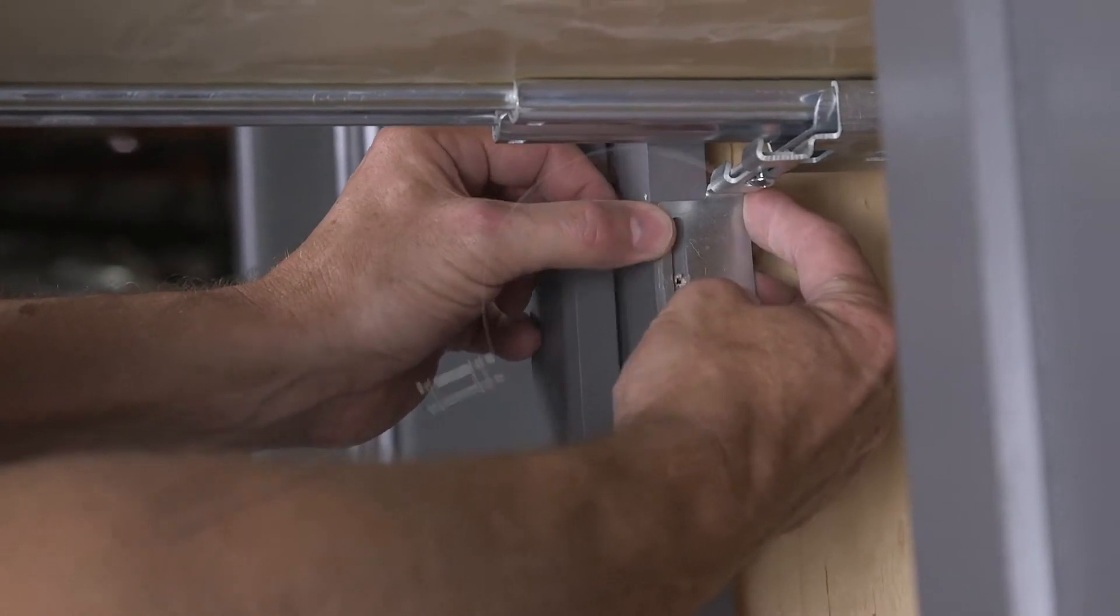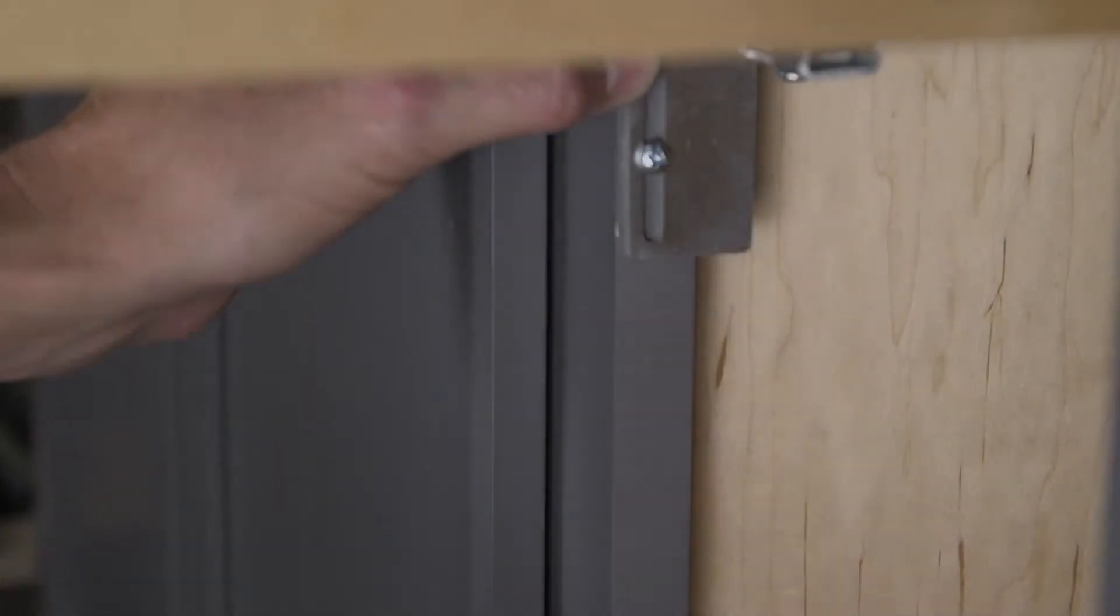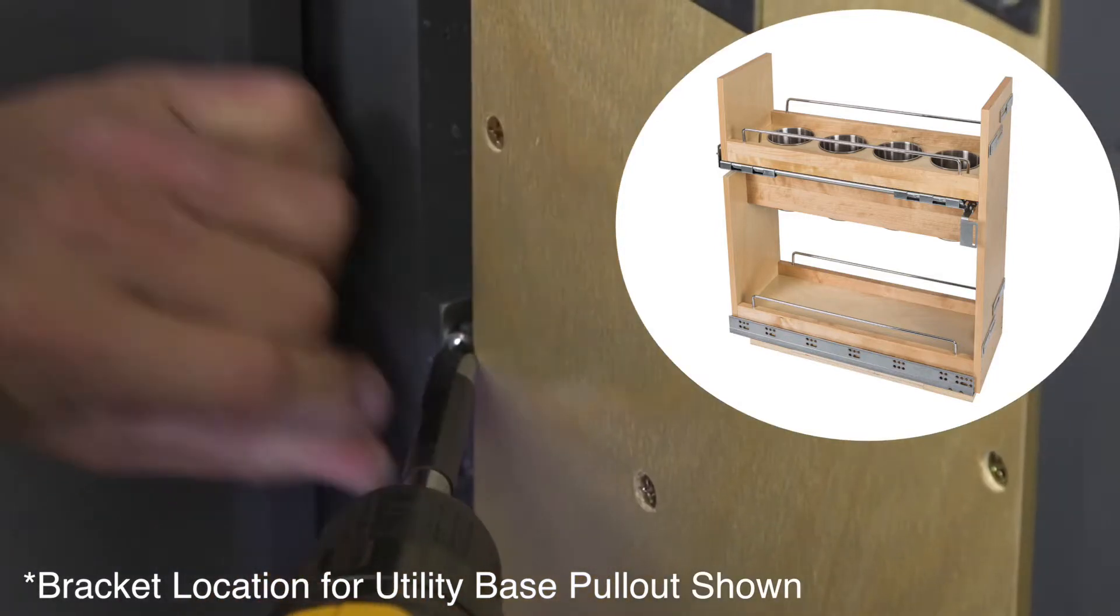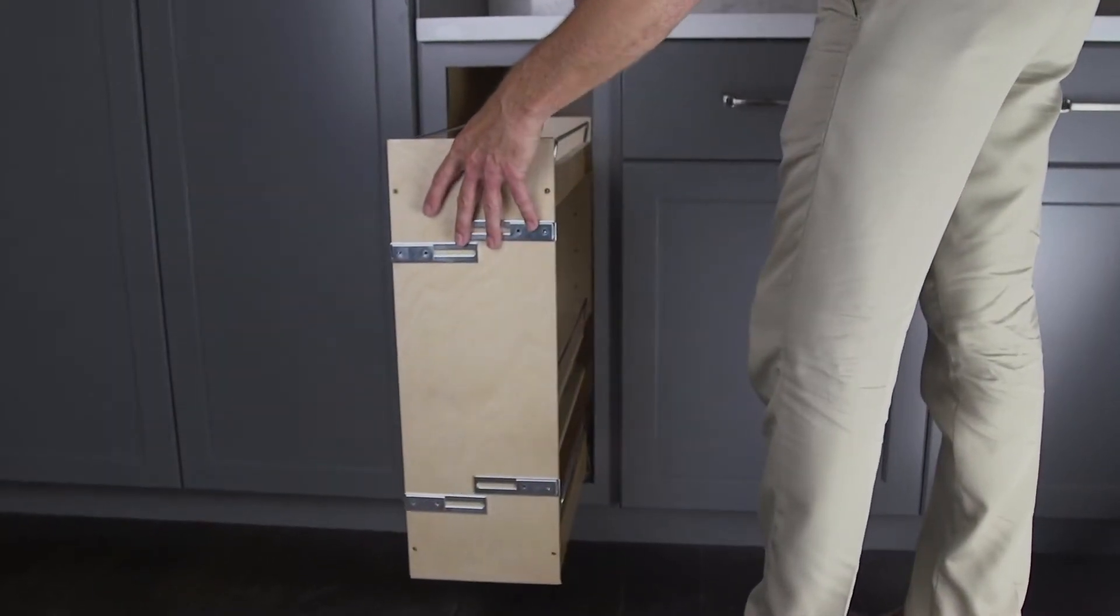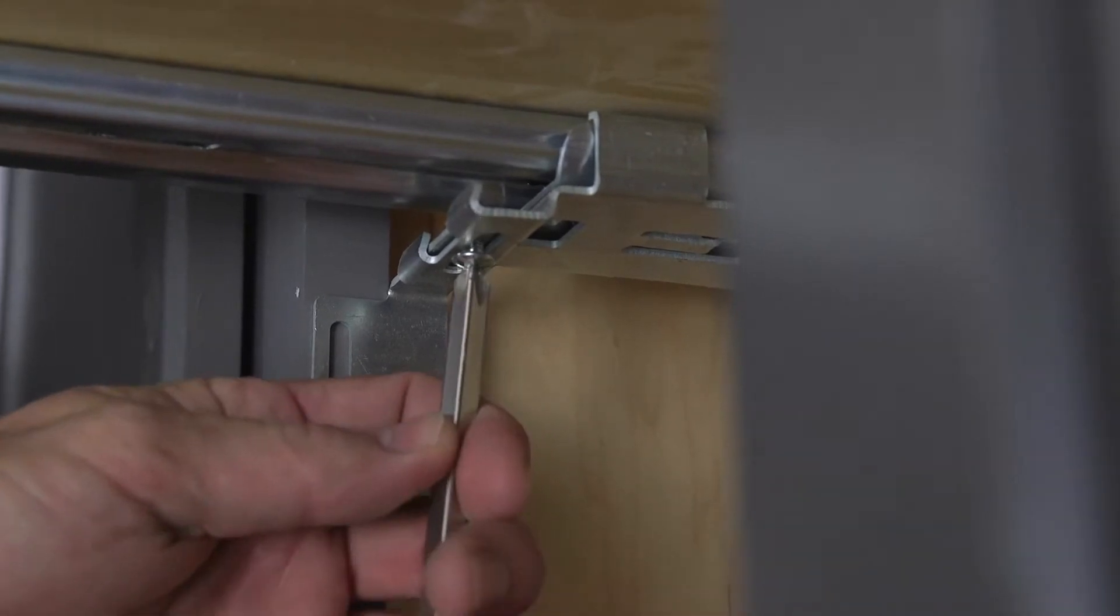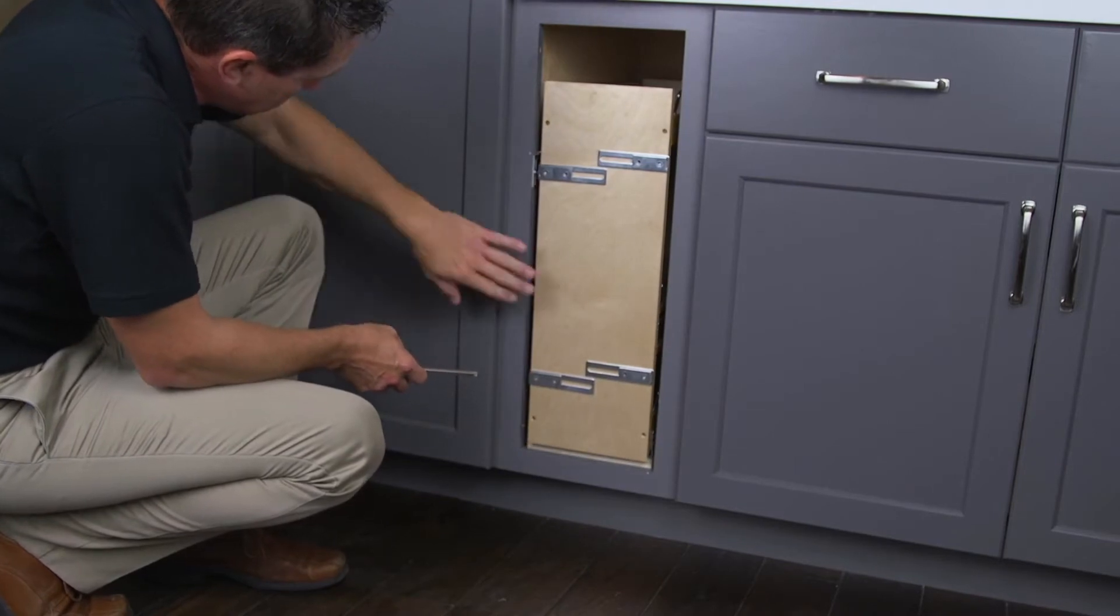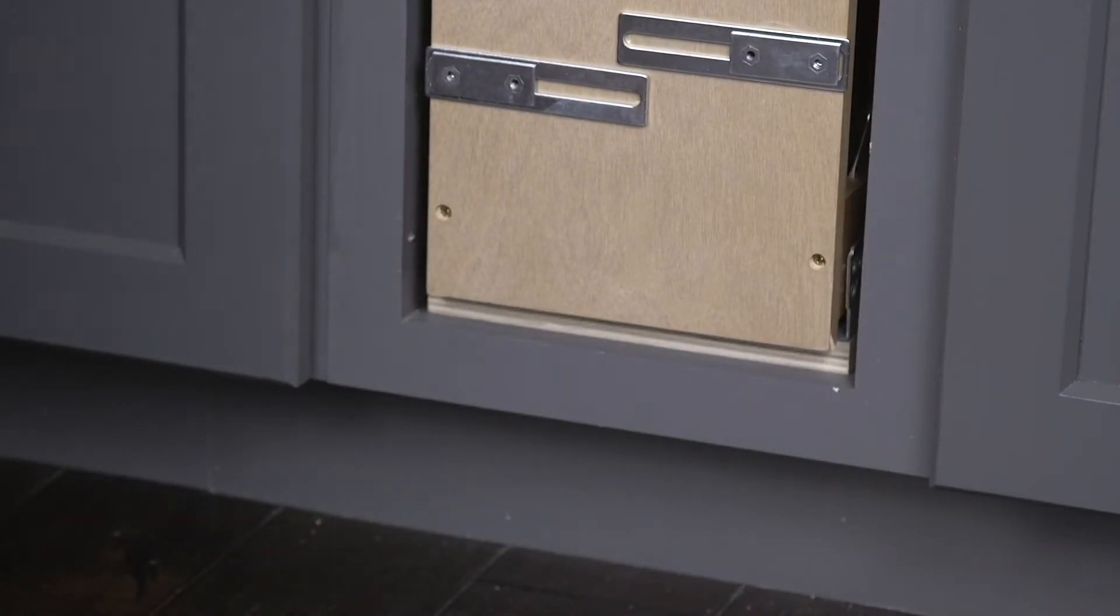Pull the top mounting bracket into position on the side of the face frame, allowing for a 3/16 inch setback. Firmly secure with one number eight by five-eighths inch pan head wood screw. Pull the unit out of the cabinet and tighten the bracket set screw. Operate the pullout, making sure the soft close is functioning correctly on the soft close models.